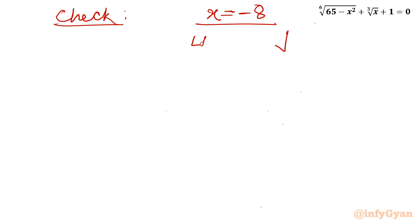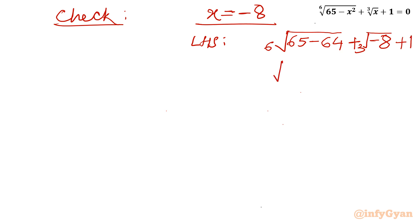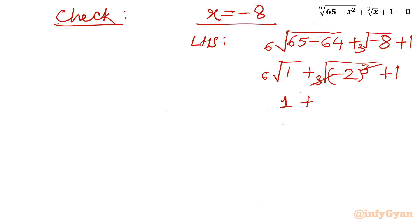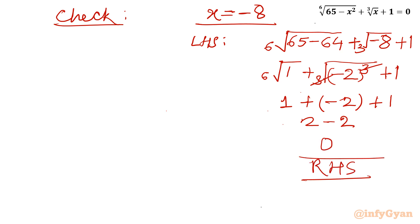Let me verify by writing the left-hand side only. Sixth root of (65 minus x²): with x equals negative 8, x² equals 64, so this becomes sixth root of 1. Then cube root of x equals cube root of negative 8 equals negative 2. So the expression is: sixth root of 1 plus cube root of negative 2 cubed plus 1 equals 1 plus (negative 2) plus 1 equals 2 minus 2 equals 0, which equals our right-hand side. So x equals negative 8 is a verified and true solution.